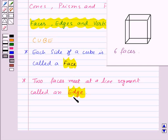So let us count how many edges are there in a cube. Here we have first edge, second, third, fourth, then fifth, sixth, seventh,